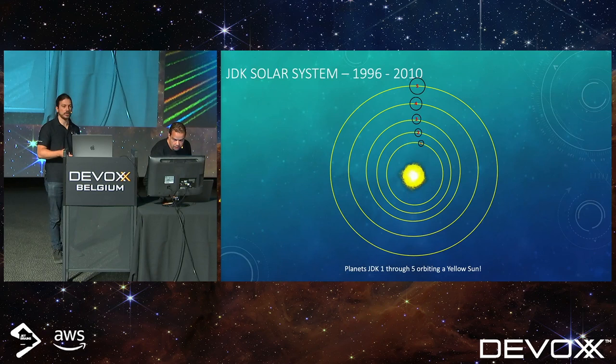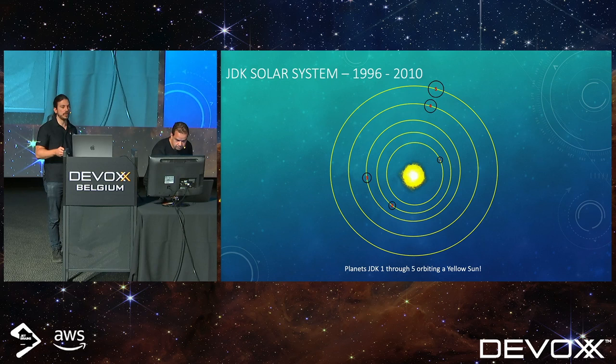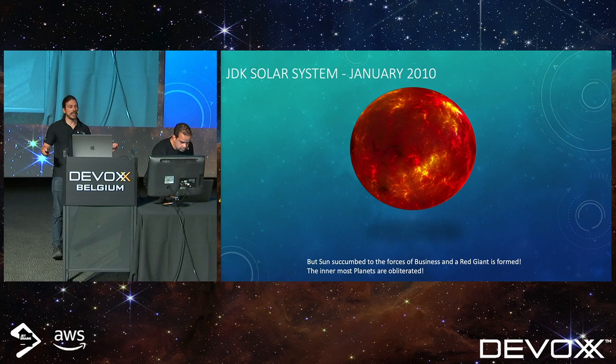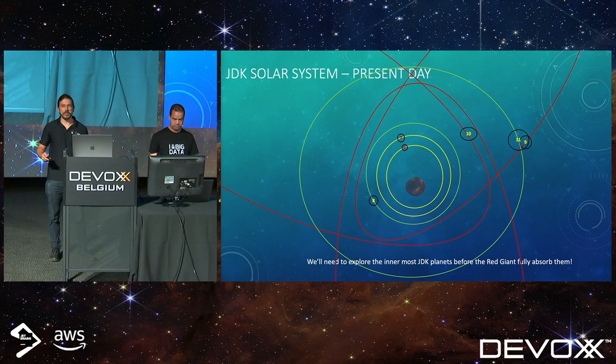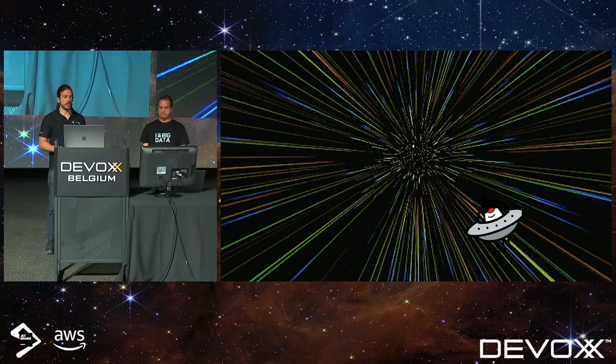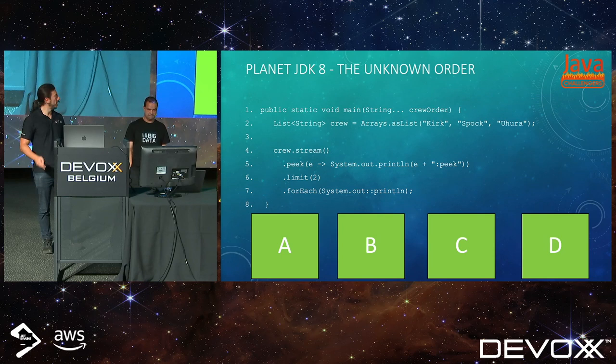We're going to go through a little story here. Since 1996 to 2010, the JDK planets were orbiting around the Sun. And in January 2010, the red giant obliterated Sun. Our mission is to explore the innermost planets so that we can get the best from Java. So this is the first planet — JDK 8.